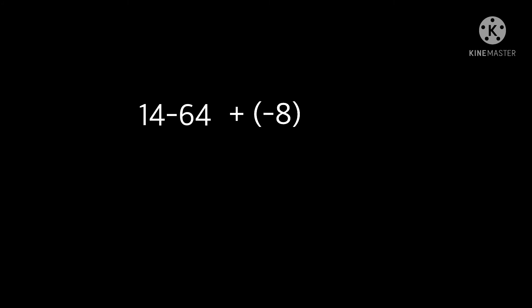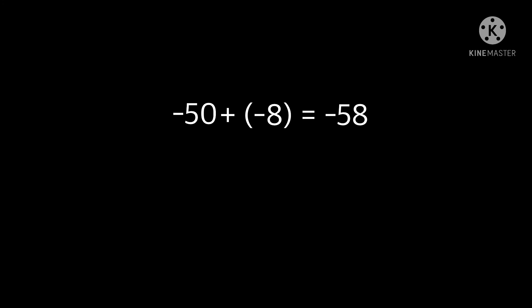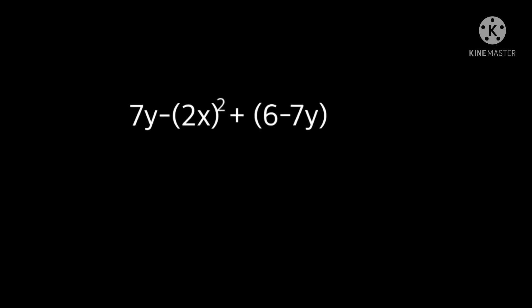For the rest of the expression: plus 6 minus 7y — 7y is 14, so 6 take away 14 equals negative 8. We put brackets so people don't get confused by the plus and minus symbols. Now 14 take away 64 equals negative 50, and negative 50 plus negative 8 equals negative 58. So 7y minus 2x squared plus 6 minus 7y equals negative 58 when x equals 4 and y equals 2.